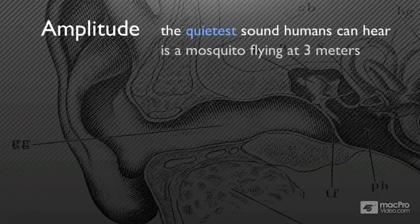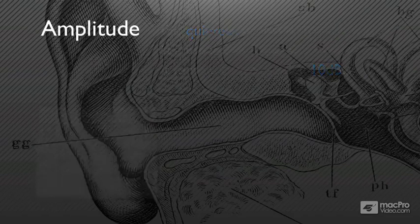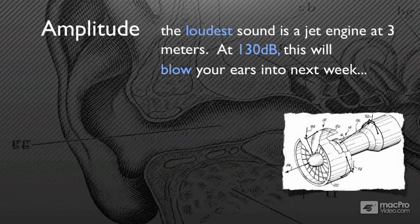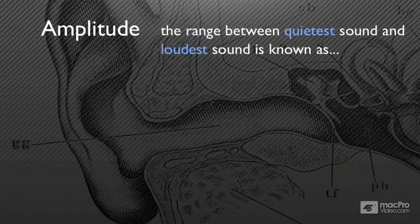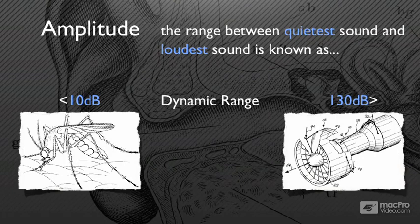The very softest sound that we can hear as humans has been determined to be a mosquito flying at three meters — that's if you're young and you've got a great set of ears. So this represents the bottom of amplitude, which will later be built into dynamic range — well under 10 decibels, a very small sound. The loudest sound would be standing three meters from a jet engine, which would be at 130 dB and basically clean your face. The range between the quietest and the loudest sound is dynamic range — from under 10 dB to plus 130, that's triple pianissimo to triple fortissimo.